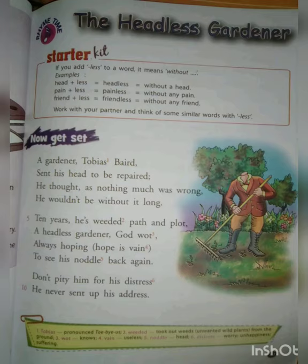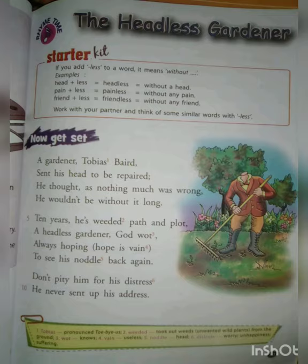But no one could show any sympathy about his annoyance and unhappiness, because he never sent up his address. So how is it possible for anything to reach you without an address? This is all about the poem 'The Headless Gardener.' I hope you understand the video. The title of the poem is 'The Headless Gardener' and the total number of lines is 10.